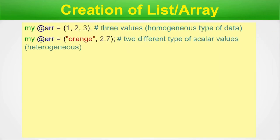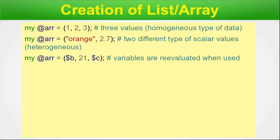For array creation: the first example is 'my @array = (1, 2, 3)' — a homogeneous array. The second is 'my @array = ("orange", 2.7)' — a heterogeneous array with a string and a real number. The third is 'my @array = ($b, 21, $c)' where $b and $c are scalars already defined; the array will contain their corresponding values.